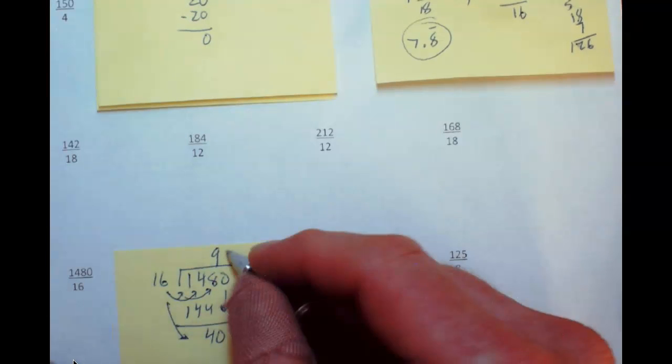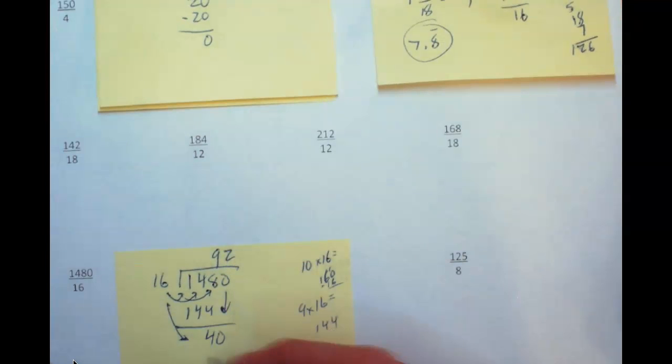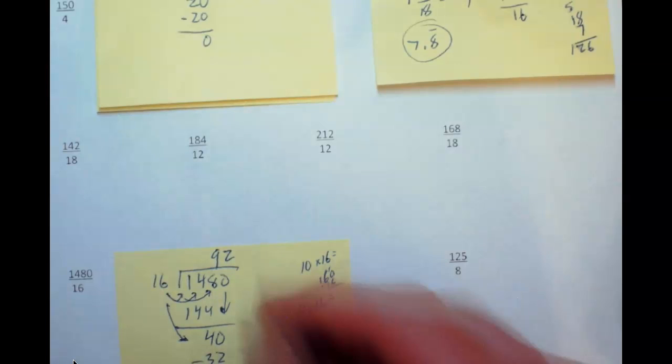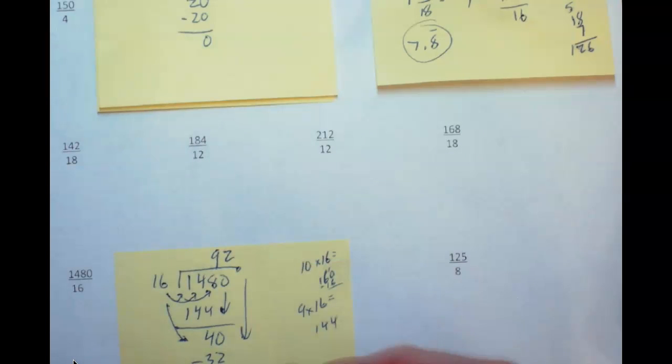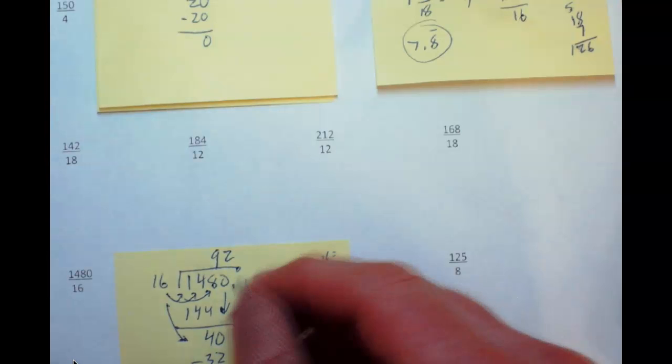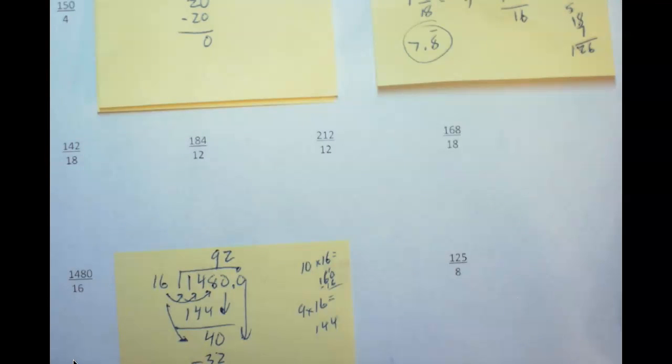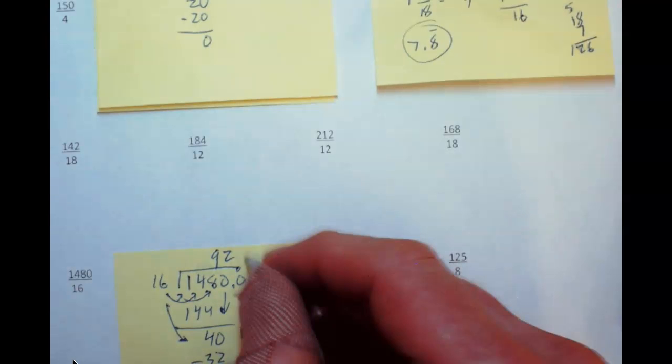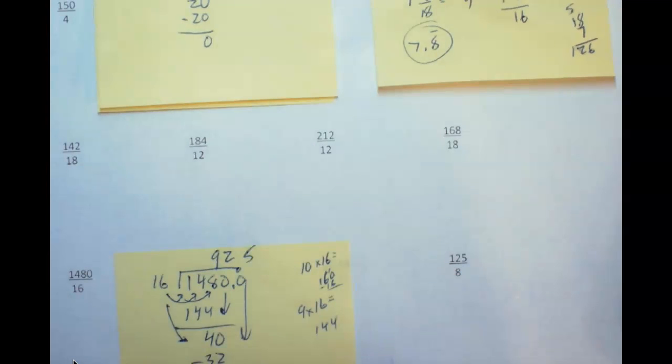Subtract that, we've got 8, so we have 80. 16 will go into 80 actually 5 times. 5 times 16 is 80. Subtract that out, we got 0.